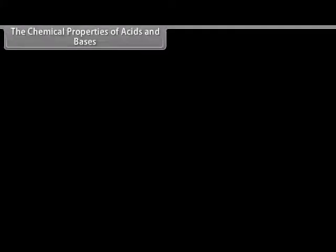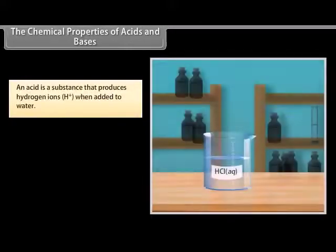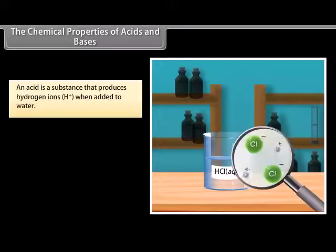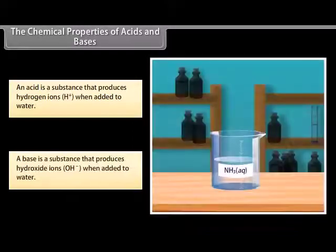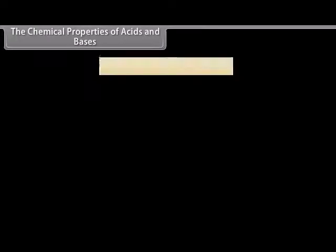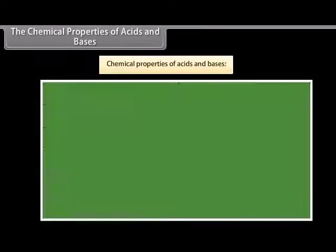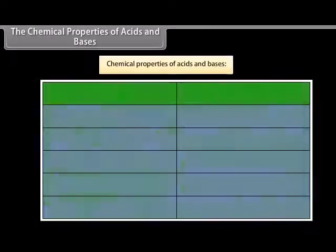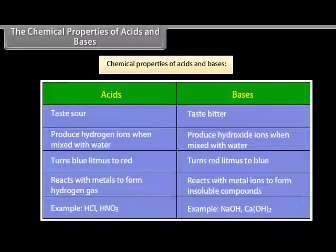An acid is a substance that produces hydrogen ions when added to water, whereas a base is a substance that produces hydroxide ions when added to water. Both acids and bases have different chemical properties. Let us look at their properties.